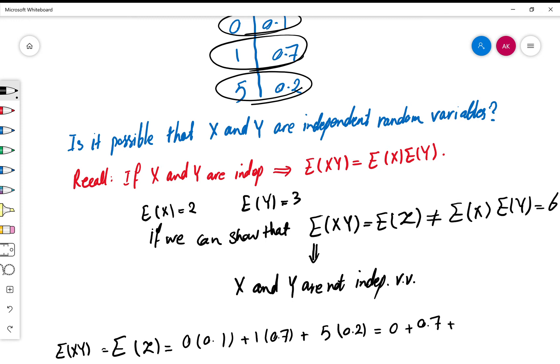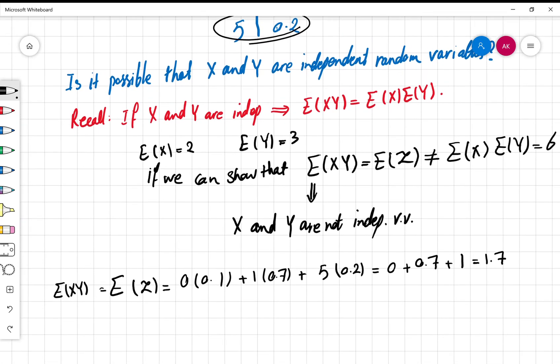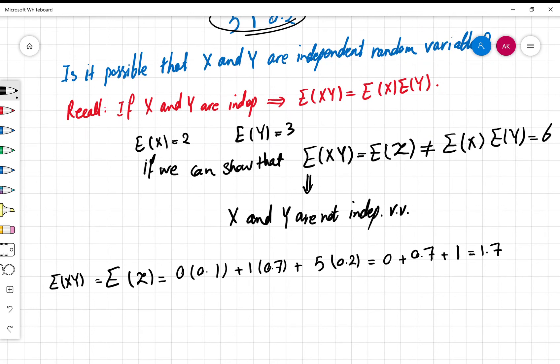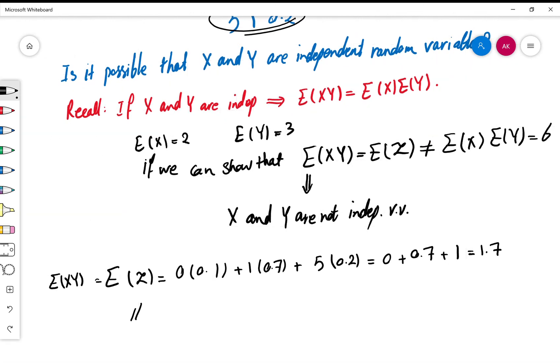Adding these up gives us 1.7. Therefore, E(XY) equals 1.7, which is not equal to 6.